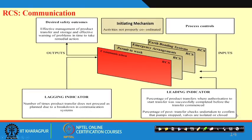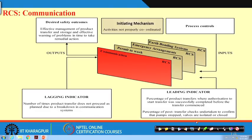For communication as a risk control system — where activities are not properly coordinated — you expect effective management of product transfer and storage, with effective warning of problems in time to take remedial action. If anything wrong is happening, it should be communicated in time. The lagging indicator is how many times this did not happen. The leading indicator shows, as a percentage, how many product transfers had authorization to transfer completed successfully before the transfer was completed.